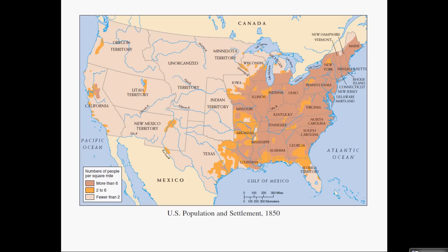What you want to pay attention to is the population diversity. Notice the way this chart works — population more than six per square mile. You see that the population of the North and even the Mississippi Valley, as well as the Shenandoah Mountains, the Blue Ridge Mountains, and so on, are relatively dense. Whereas in certain areas of the South they're smaller, and in the West, very empty.